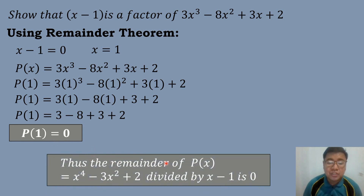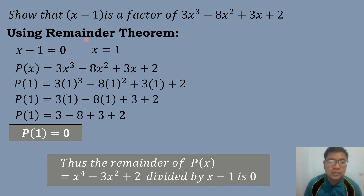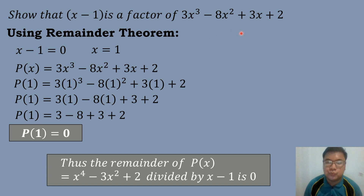So P of 1 is equal to 0. Thus, the remainder of P of X divided by X minus 1 is equal to 0. Therefore, X minus 1 is a factor of 3X cubed minus 8X squared plus 3X plus 2.